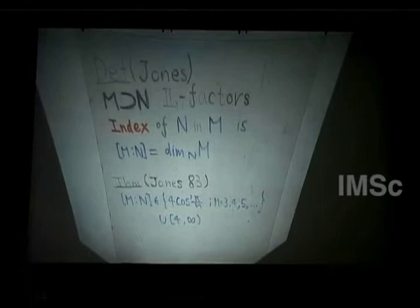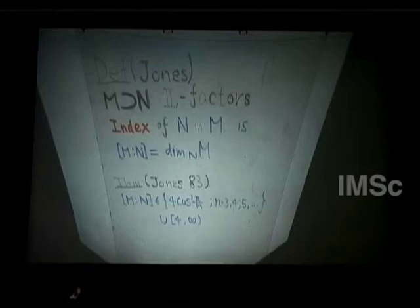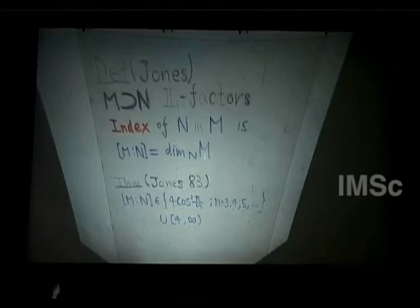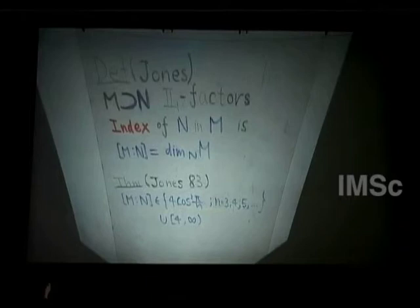More precisely, a II₁ factor has a very nice notion of dimension: for every N-module, you can assign a dimension — a positive number. This number essentially measures how many copies of N are contained in M as a left N-module. So M is naturally a left N-module by left multiplication, and the index essentially counts this.